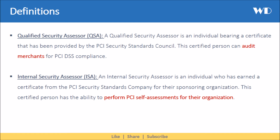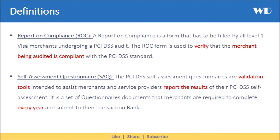An internal security assessor is an individual who has earned a certificate from the PCI Security Standards Council for their sponsoring organization. This certified person has the ability to perform PCI self-assessments for their organization. A report on compliance is a form that has to be filled by all level 1 Visa merchants undergoing a PCI DSS audit. The ROC form is used to verify that the merchant being audited is compliant with the PCI DSS standard.